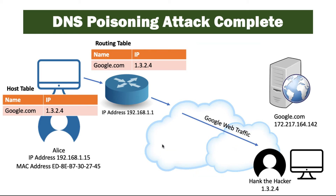So when Alice tries to access Google.com, it actually goes to the IP address 1.3.2.4 instead of Google's actual address. And that's where Hank can serve up his malicious content or, in some other way, do malicious things to Alice's computer. This is why it's important to protect against this. A lot of times we're using more secure DNS servers, and we want to make sure that Hank can't get access to and overwrite those records in the first place.